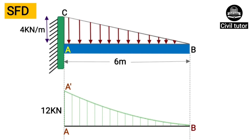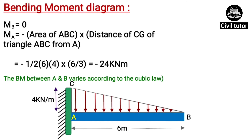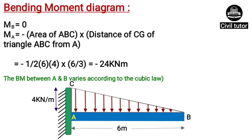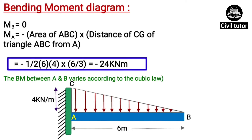Now we need to calculate the values of bending moment at points B and A. The bending moment at B is equal to 0. At point A, the bending moment equals minus the area of triangle ABC multiplied by the distance of the center of gravity of the triangle from point A: −(½ × 6 × 4) × (6/3) = −24 kilonewton meter.